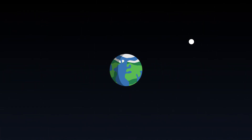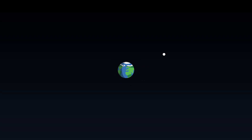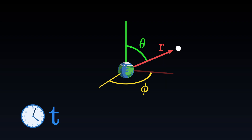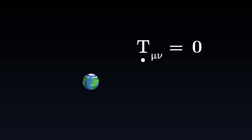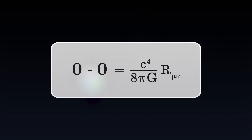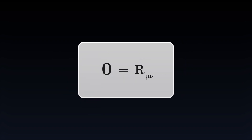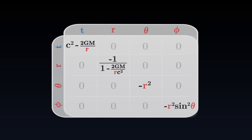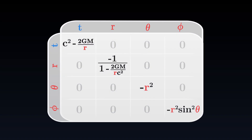First, let's choose a coordinate system. We decide to observe the point from a very far distance, and we measure time on our clock t, the distance between the point and the center of the body r, and two angles, theta and phi. Our point sits in a vacuum, therefore the energy-momentum tensor is zero. Using the second version of Einstein's equation, we deduce that the Ricci tensor at this point must also be zero. To determine the metric from the Ricci tensor, the calculations are tedious and require solving multiple differential equations. But thanks to the symmetries that we postulated for the problem, it is still possible to obtain an exact expression. This is the Schwarzschild metric.